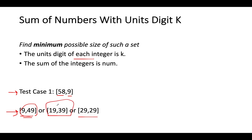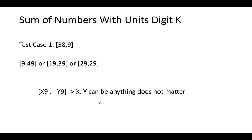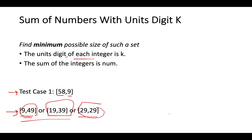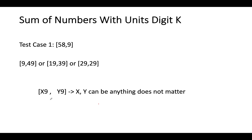Both conditions are met: the unit digit for each integer is 9 and the sum of the two elements is 58. As per the first constraint, the unit digit of each element in the set should be equal to K. So all elements in the answer set will have 9 as the unit digit. We represent them as x9 and y9 — anything can appear in the higher digits, it could be 9 or not. What we're interested in is identifying how many digits would be in this set.